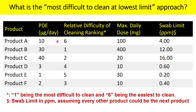Product A is ranked 6, meaning it is a very easy-to-clean product. Product B is ranked 1, meaning it is a very difficult-to-clean product. Products C, D, E, and F have moderate cleaning difficulties. The ranking goes from 1 (most difficult) to 6 (easiest).